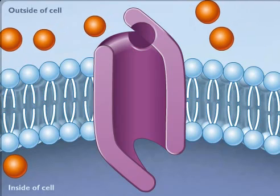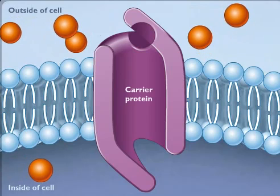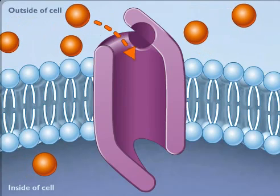In the process known as facilitated diffusion, a special carrier protein with a central channel acts as a selective corridor which helps molecules move across the membrane.